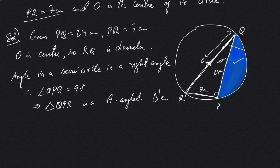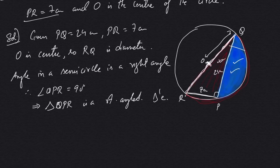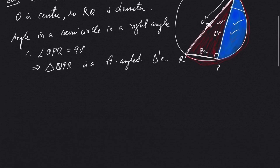We will use Pythagoras' theorem in this triangle to find out RQ. We are trying to find the radius because to find the area of the shaded portion, we will take the area of the semicircle and remove the area of the right triangle. That will give us the area of the shaded portion, and for that we will need the radius.